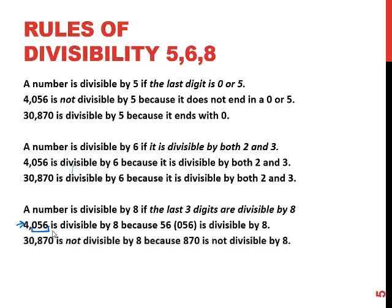Now 30,870 is not divisible by 8 because if we look at the number 870, 8 does not divide that number. Now one thing we can see if we look closely: if a number is not divisible by 4, it can't be divisible by 8 because 4 goes into 8, so if 4 doesn't go into 30,870, 8 can't.